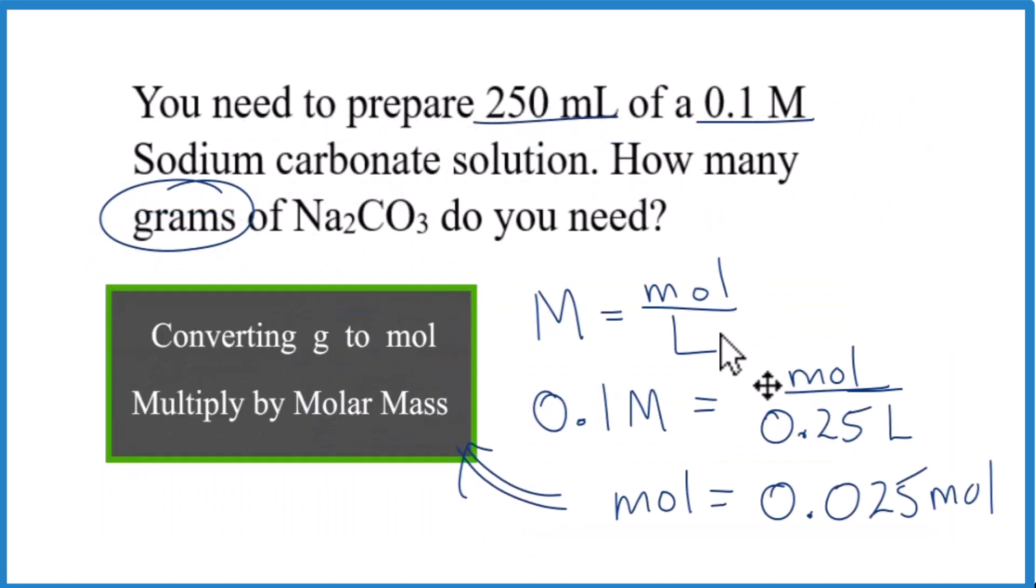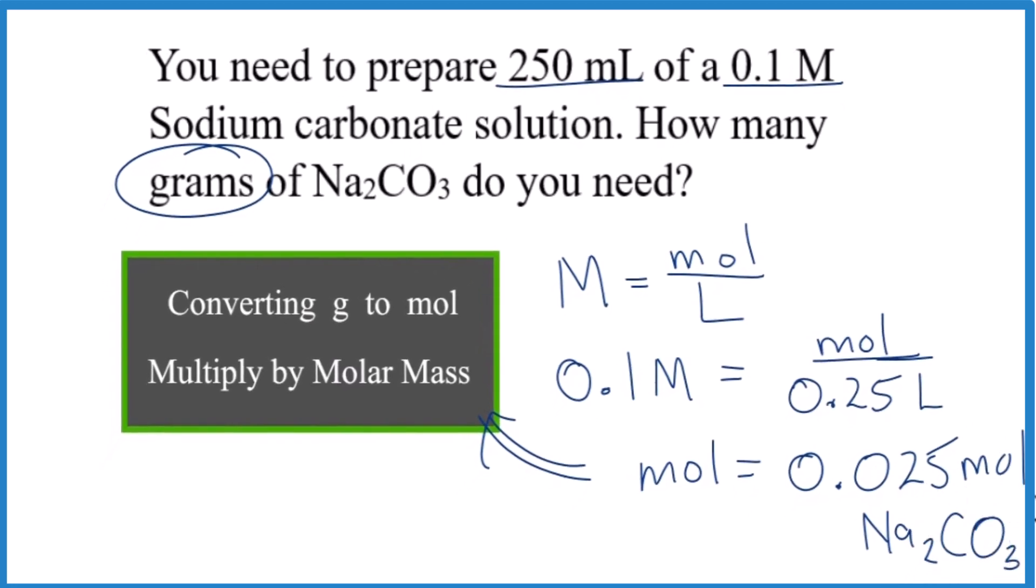So we have our molarity equals moles over liters. We set it up and we solve for moles. So we multiply both sides by 0.25. We end up with 0.025 moles of Na2CO3. That's important. Now, all we have to do is multiply moles times the molar mass for Na2CO3. We'll have our grams.